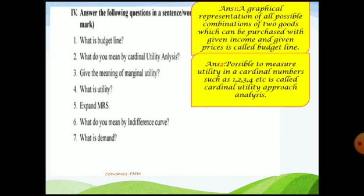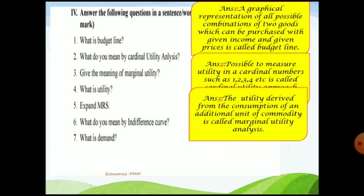Third question: give the meaning of marginal utility. The utility derived from the consumption of an additional unit of a commodity is called marginal utility. It is the additional utility derived from consuming one more unit — that is called marginal utility. Next: what is utility? The want-satisfying power of a commodity or service is called utility.